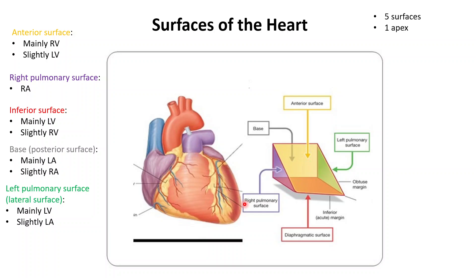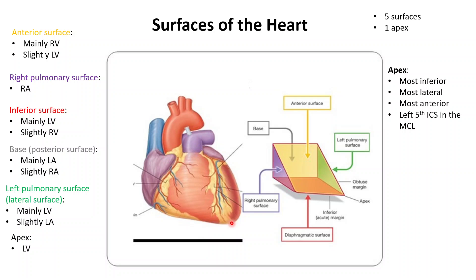The apex is made up entirely of the left ventricle — specifically the inferolateral part of the left ventricle. The apex is the most inferior, most lateral, and most anterior part of the heart. It is located in the left fifth intercostal space in the midclavicular line.